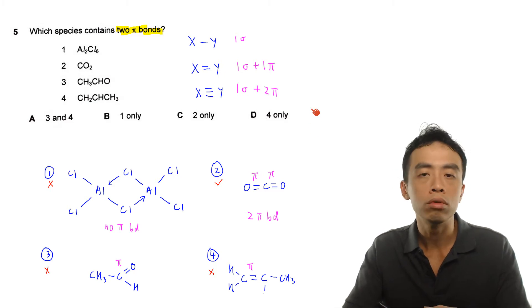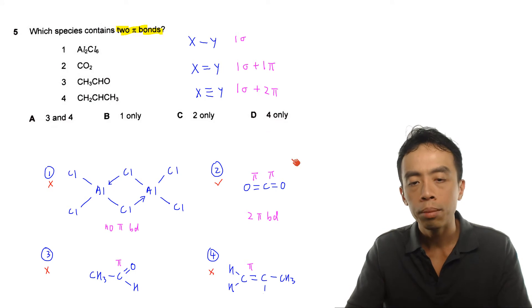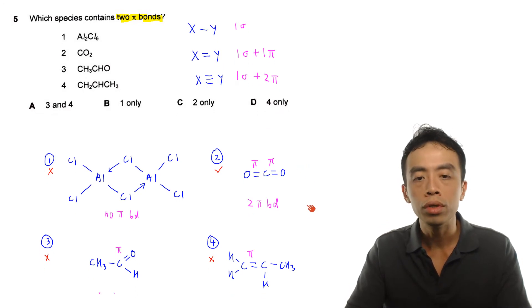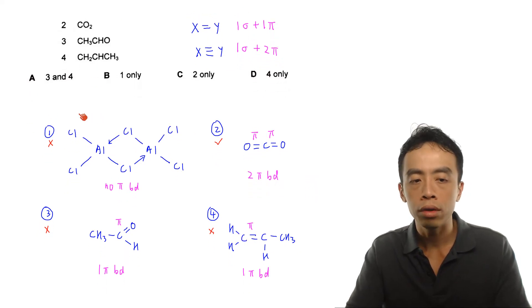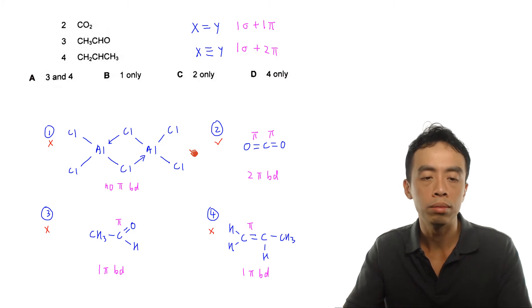So we just need to make use of this concept for this question. And of course, we would need to be able to draw out the Lewis structure for options 1, 2, 3, and 4. But they are pretty common species. So we should be able to draw them out quite quickly. So option 1, Al2Cl6, this is our aluminum chloride dimer. So it will look something like this. Now in principle, we should be familiar with aluminum chloride dimer. We will just show you the dimer and how the Lewis structure looks like.